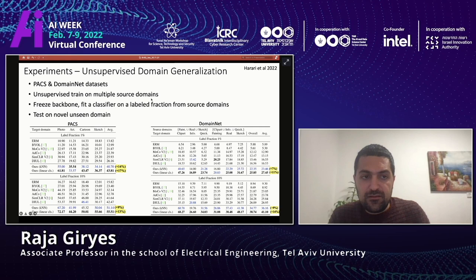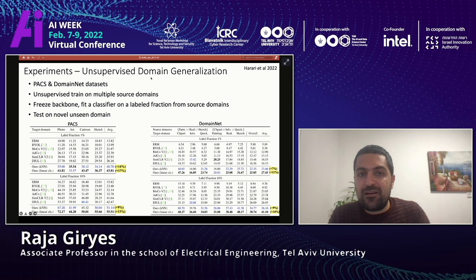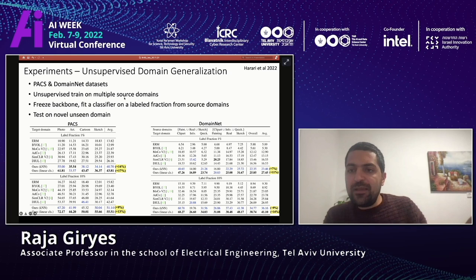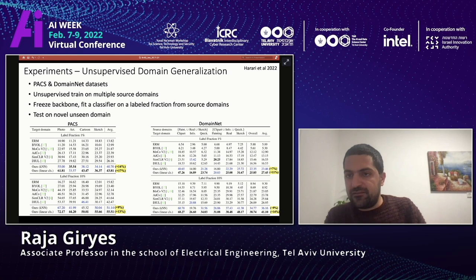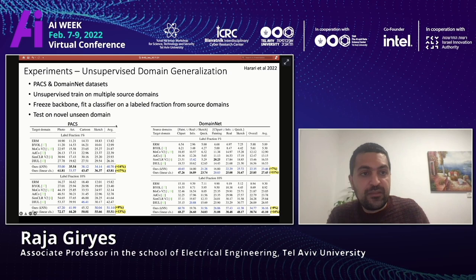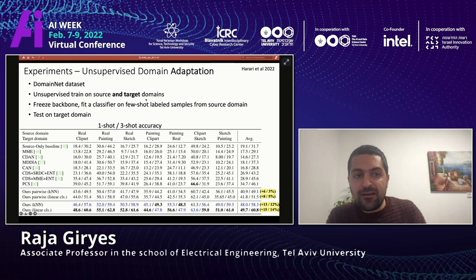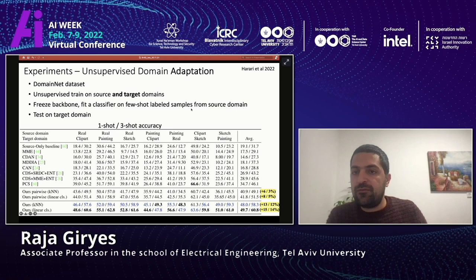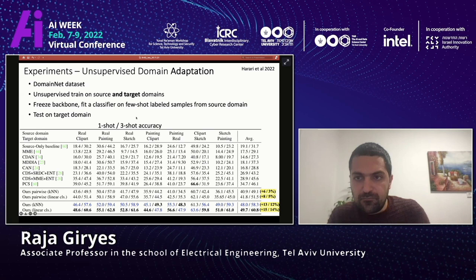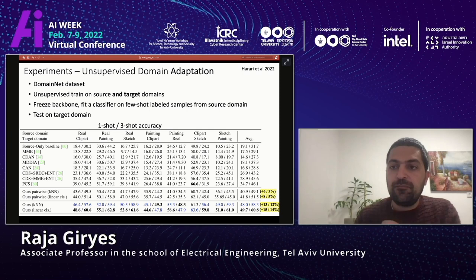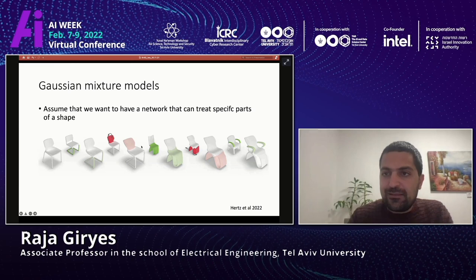For example, in unsupervised domain generalization — training on multiple source domains and testing on a novel unseen domain, such as training on sketches and real images and then testing on art we never saw — we see very large improvement using our technique. Similarly, in unsupervised domain adaptation with unsupervised training on source and target domains, then using a few labels from the source domain to test the classifier on the target domain, our technique also achieves very large improvement compared to other techniques. So classic edges are very useful for improving neural network training.